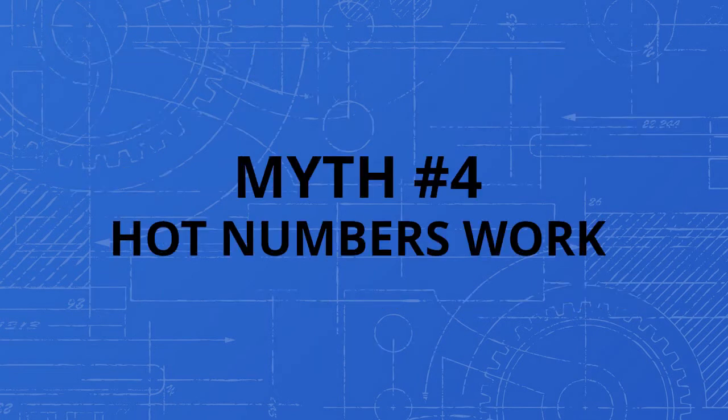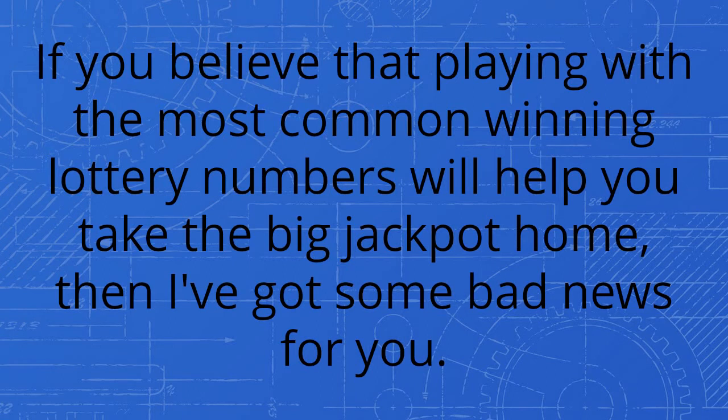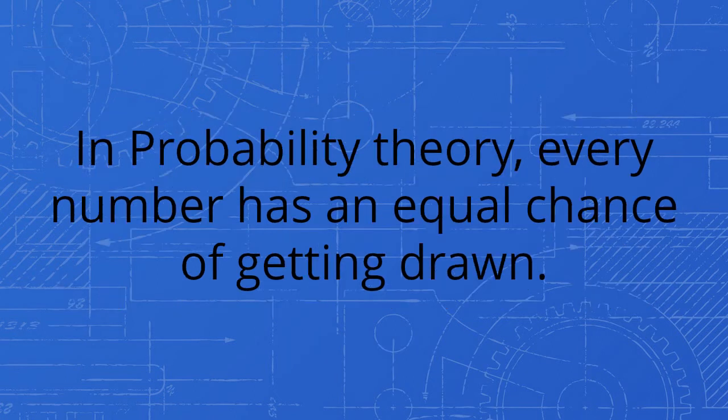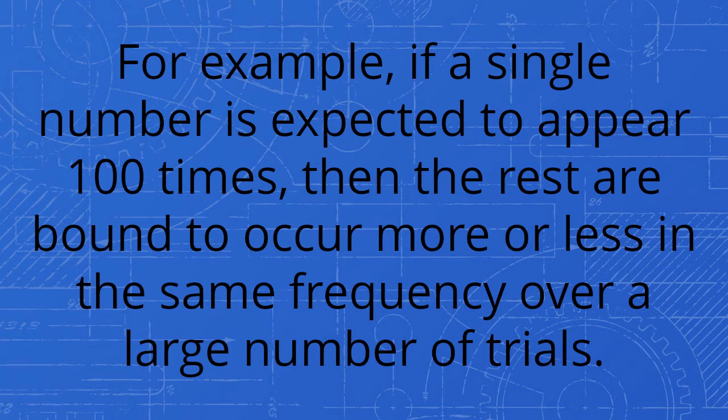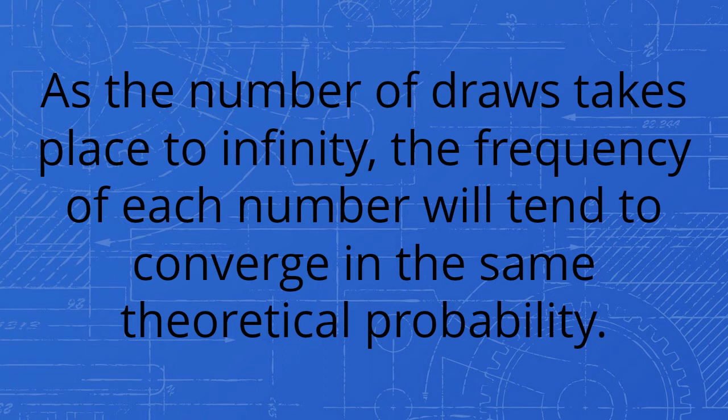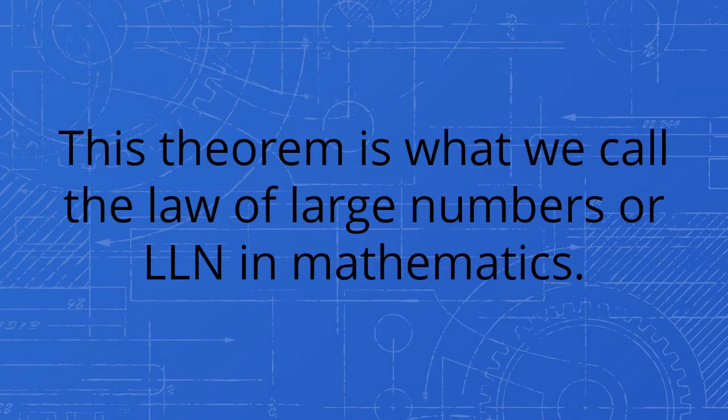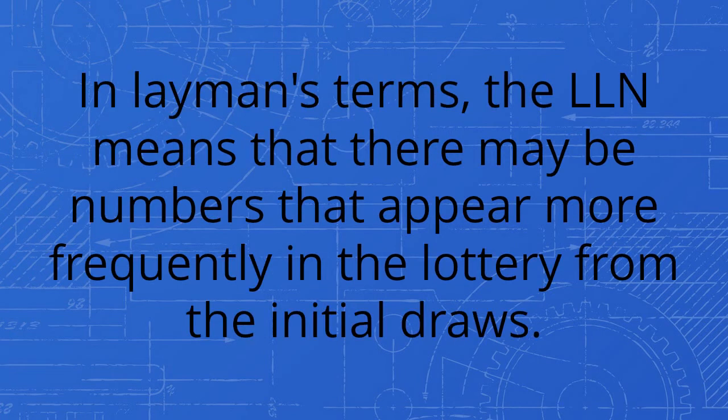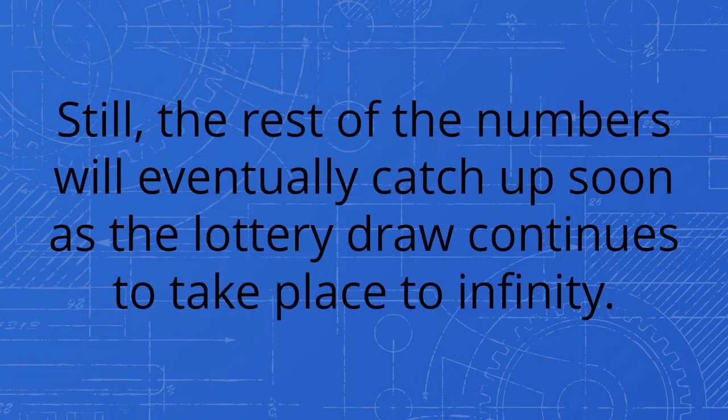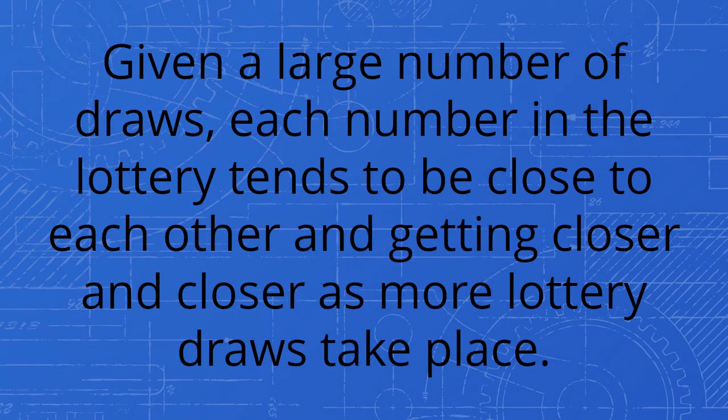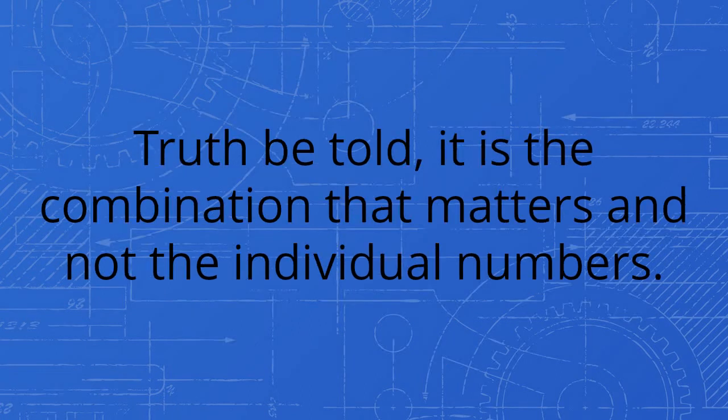Myth number four: hot numbers work. If you believe that playing with the most common winning lottery numbers will help you take the big jackpot home, then I've got some bad news for you. In probability theory, every number has an equal chance of getting drawn. For example, if a single number is expected to appear 100 times, then the rest are bound to occur more or less in the same frequency over a large number of trials. As the number of draws takes place to infinity, the frequency of each number will tend to converge in the same theoretical probability. This theorem is what we call the law of large numbers, or LLN, in mathematics. In layman's terms, the LLN means that there may be numbers that appear more frequently in the lottery from the initial draws. Still, the rest of the numbers will eventually catch up soon as the lottery draw continues to take place to infinity. Given a large number of draws, each number in the lottery tends to be close to each other and getting closer and closer as more lottery draws take place.